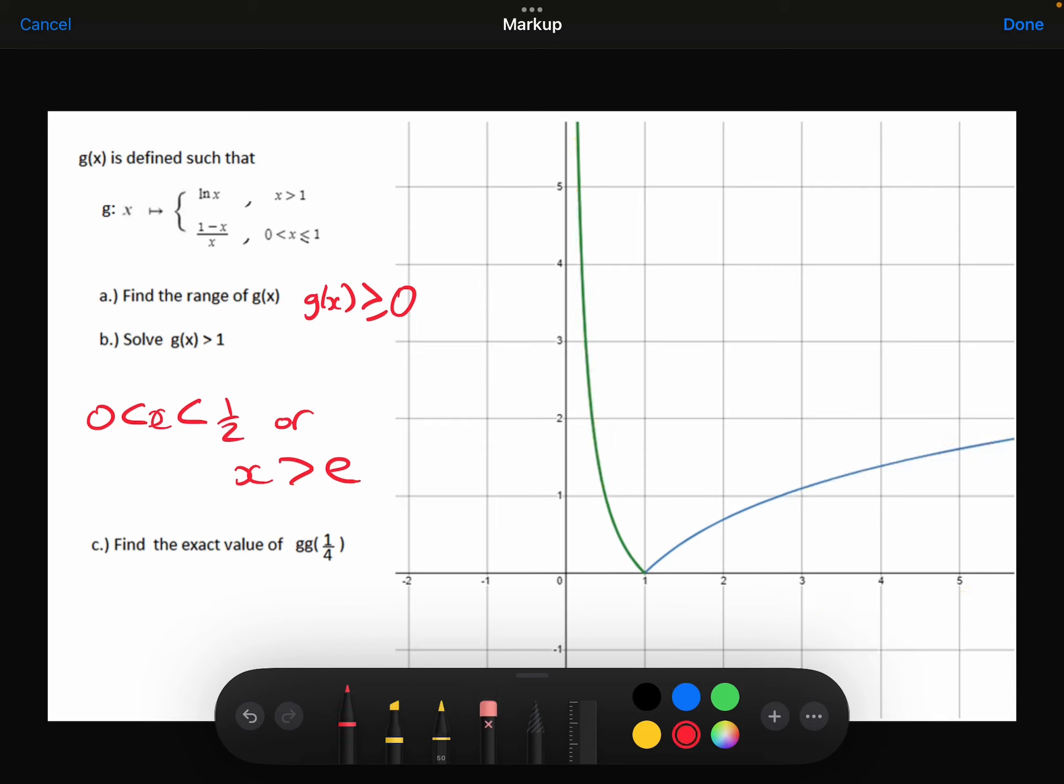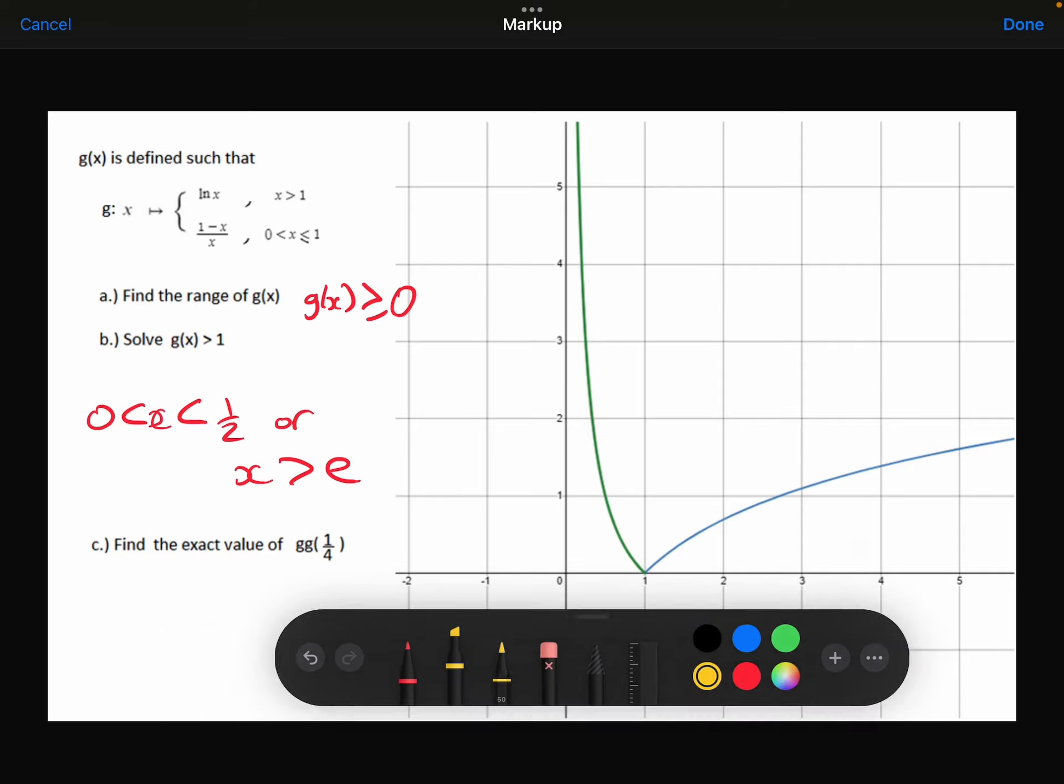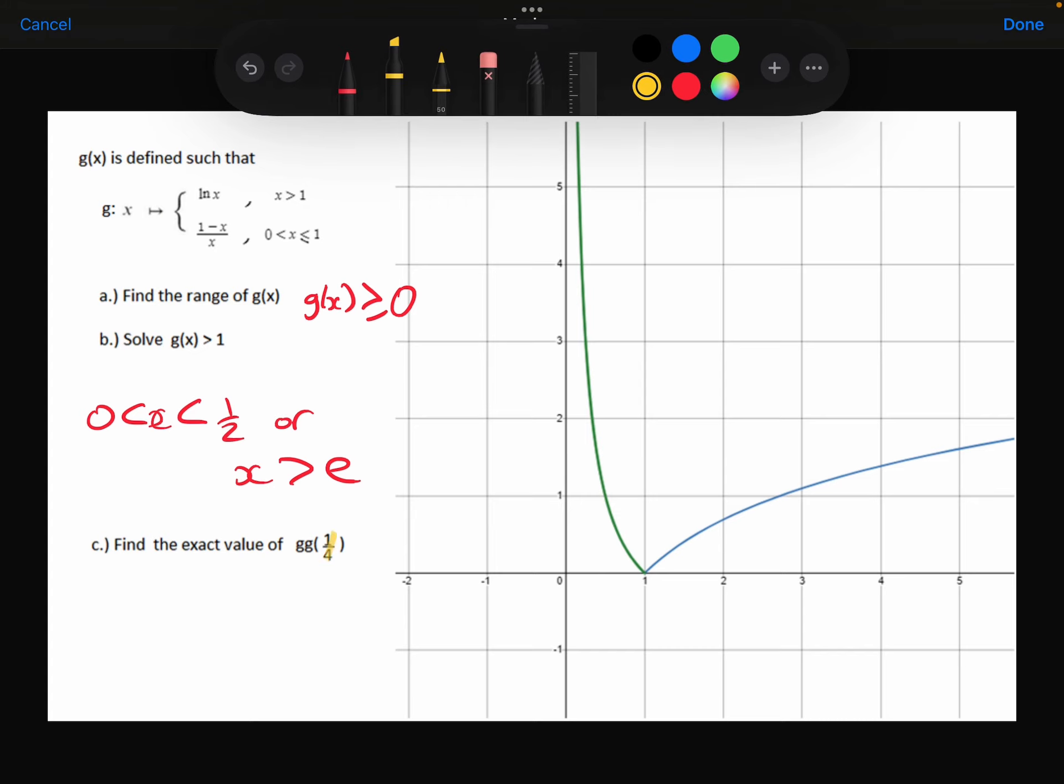Right, part C. Find the exact value of G, G of a quarter. So this is telling me to substitute 1 quarter into G, get my answer, and then substitute that into G again. Another way of thinking about it, work out G of a quarter and then substitute that into G again.